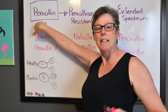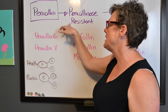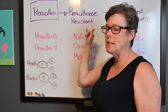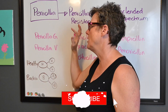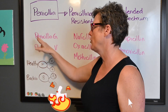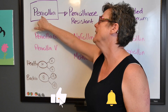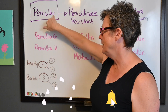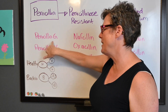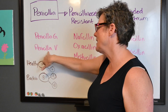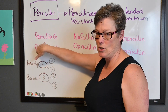Penicillin is the classification and penicillinase-resistant antibiotics is also a classification — these two drug groups together. You'll notice at the end the suffix 'cillin,' which is a direct correlation. Here we have penicillin G and penicillin V.